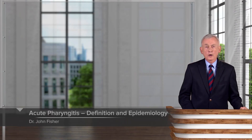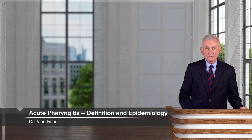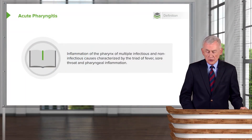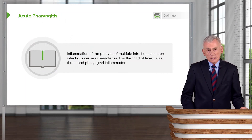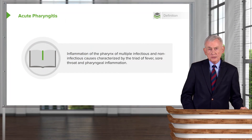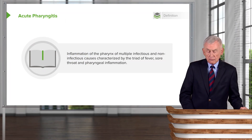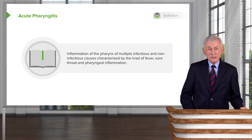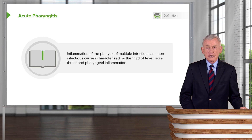In our discussion of upper respiratory tract infections, there's probably none more important than acute pharyngitis. Acute pharyngitis would be inflammation of the pharynx from multiple infectious and non-infectious causes, characterized by this triad: fever, sore throat, and pharyngeal inflammation.